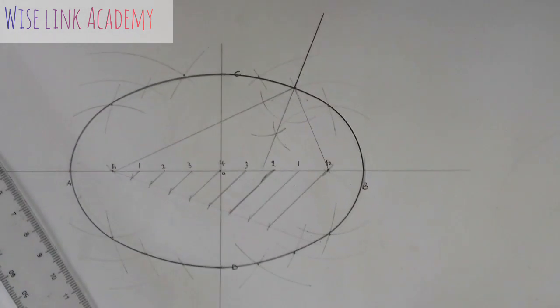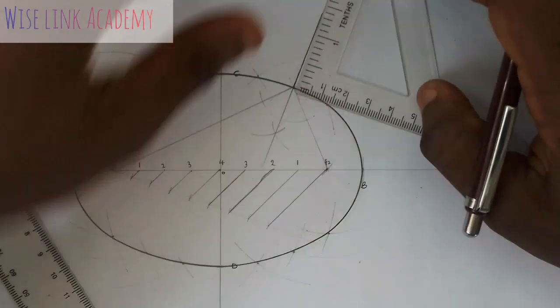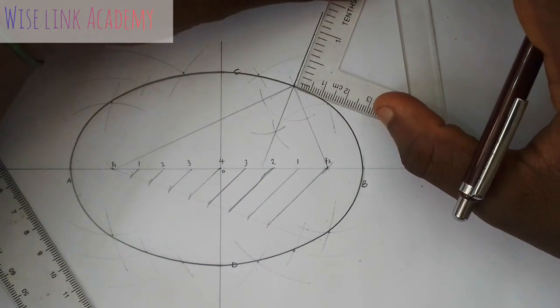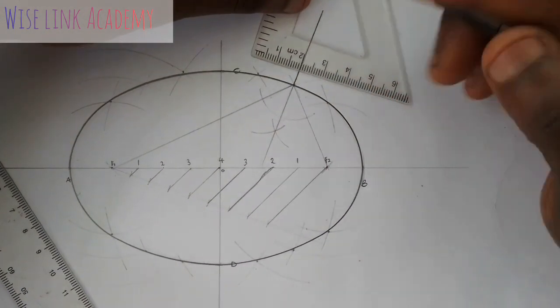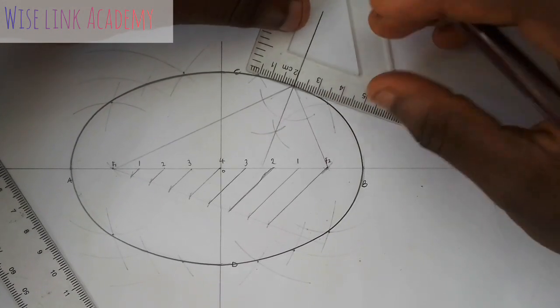I will take my set square this way. Just place it this way. Make sure it's touching. Or, just come to this point. This is point two. Just take it to point two.